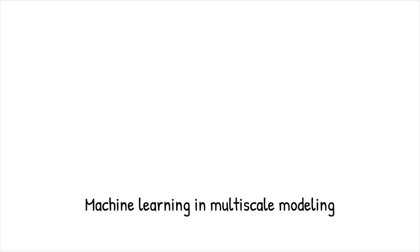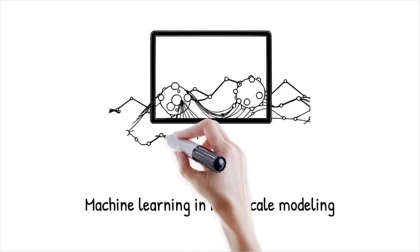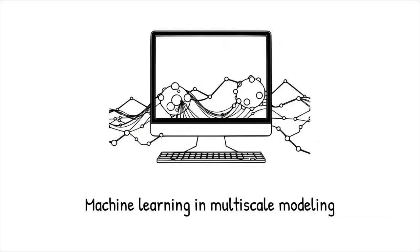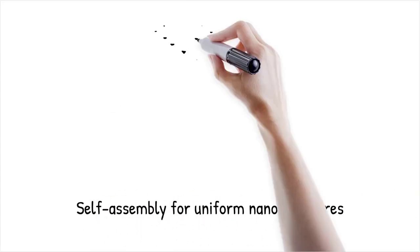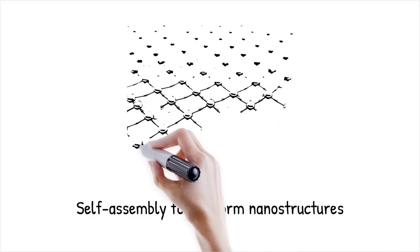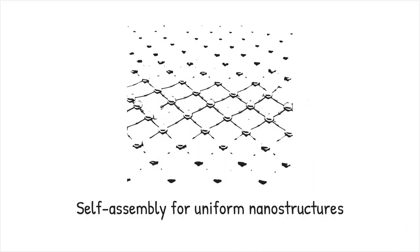Advances in machine learning and accelerated multi-scale modeling promise to predict size-dependent properties across vast compositional and morphological spaces. Self-assembly techniques aim to produce uniform nanostructures at scale, reducing variability in size-dependent behavior.